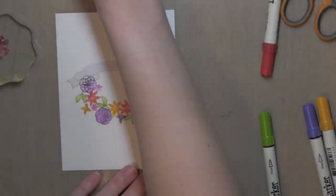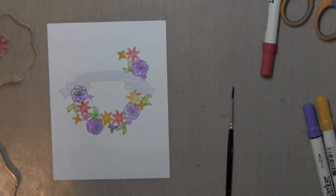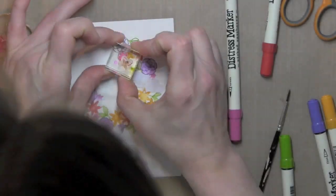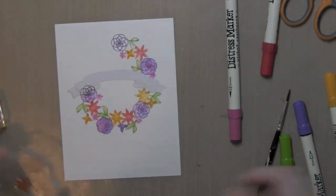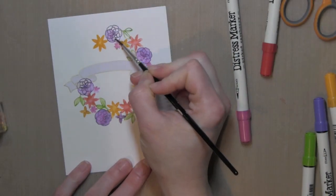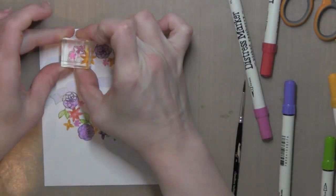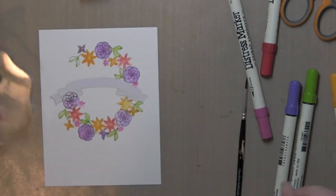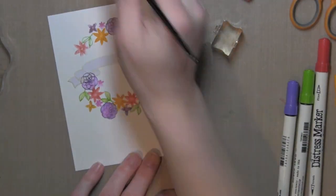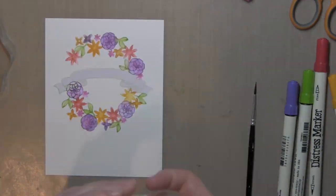I'm going to speed through the rest of the creation of my wreath so we can get to the rest of the card. This would also be a fun dimensional card if you stamped all of these individually either water colored or with a different type of stamp ink and then die cut them with the coordinating floral dies and then put them together into the shape of a wreath. So many fun ways to use this great stamp set.